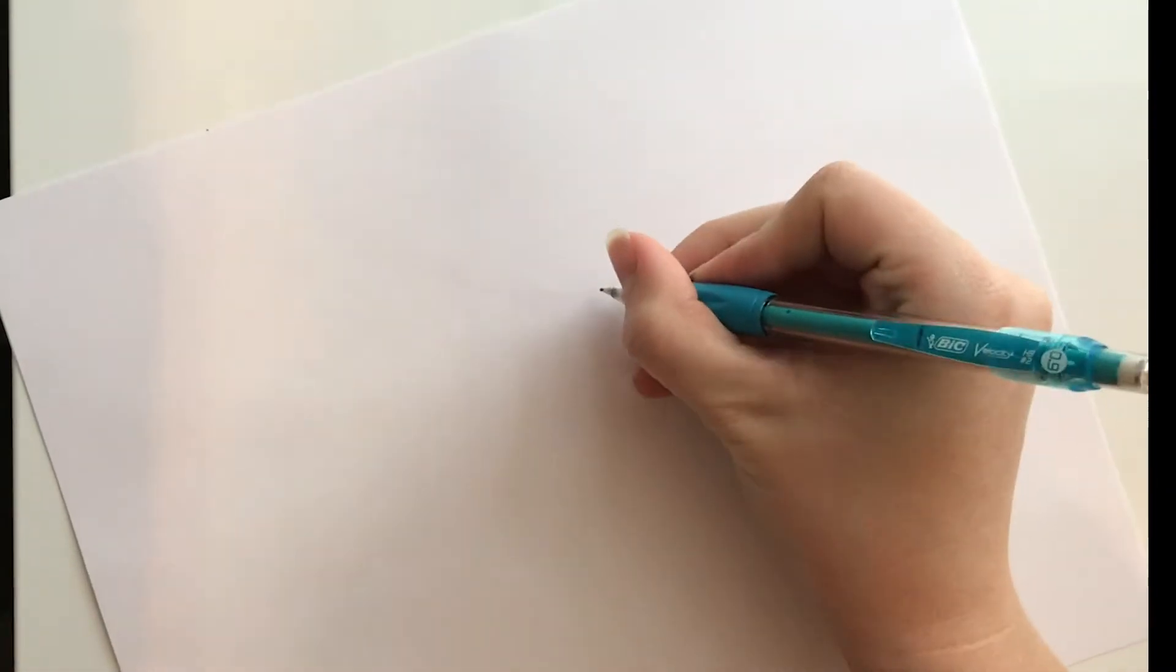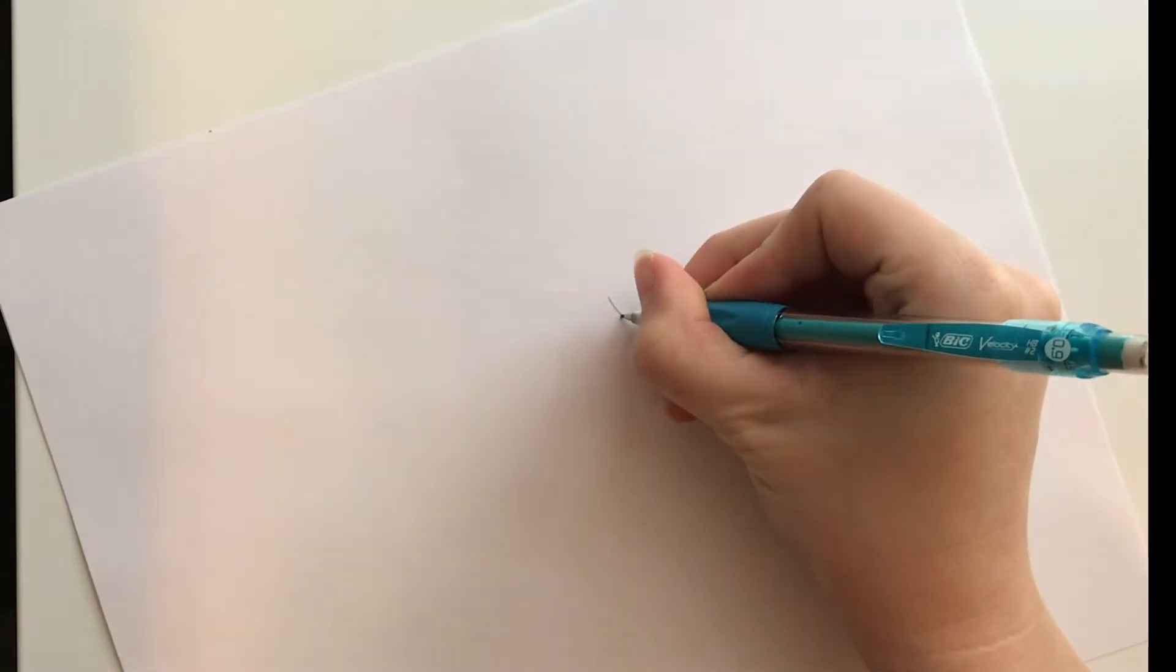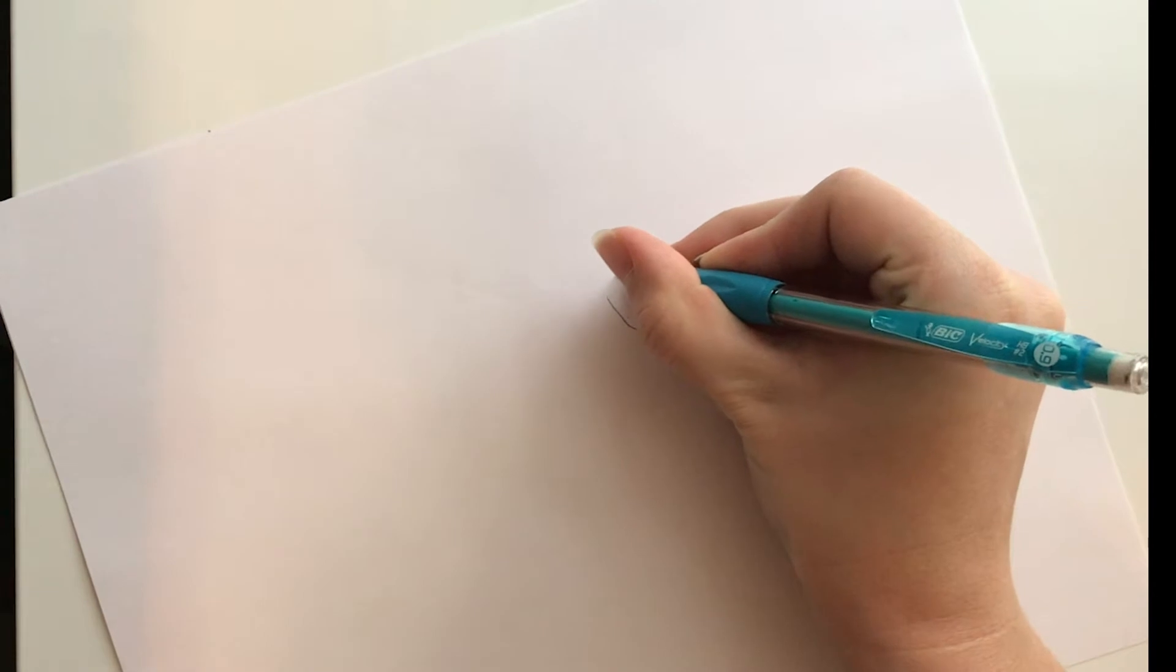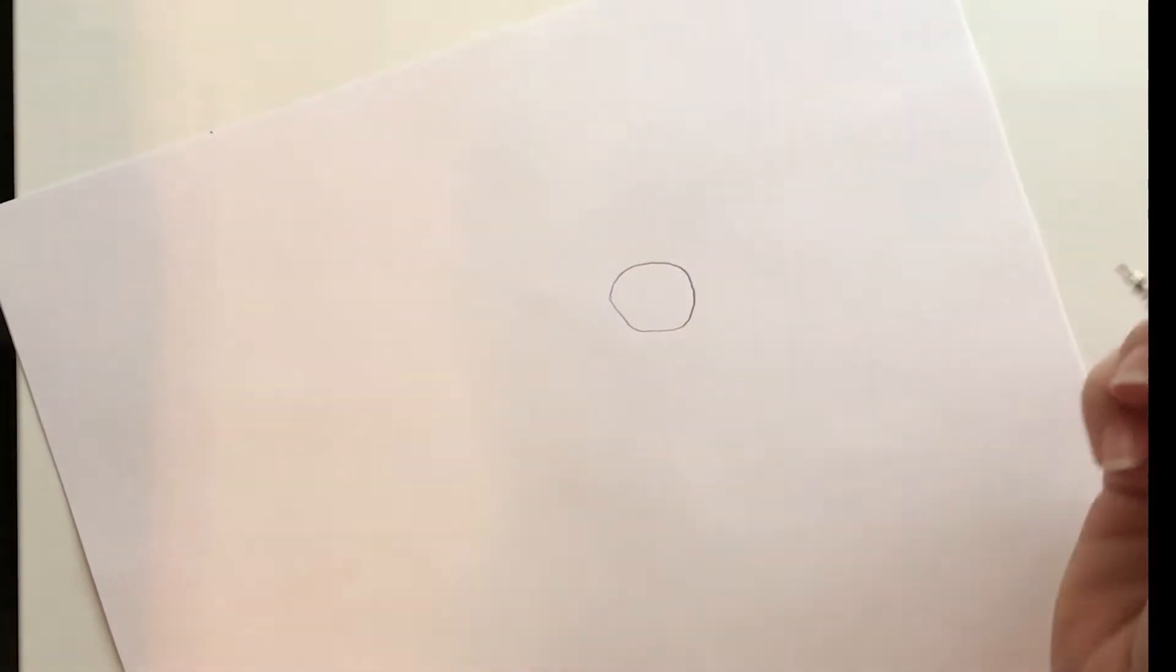Hey everybody! This week we are going to be drawing and coloring a sloth. I want you to start out with really light lines because we're going to be doing some erasing and it'll make it hard to erase if your lines are too dark.